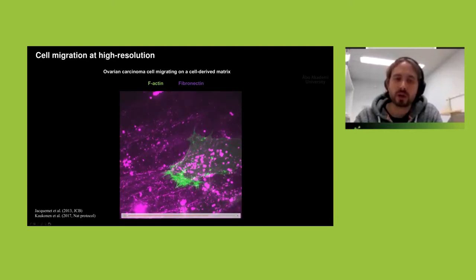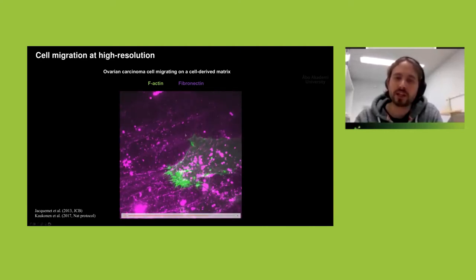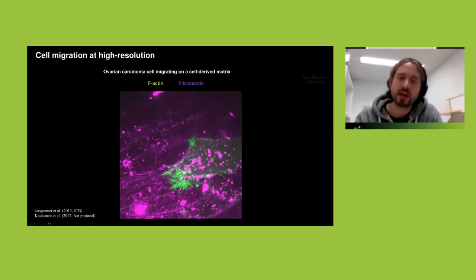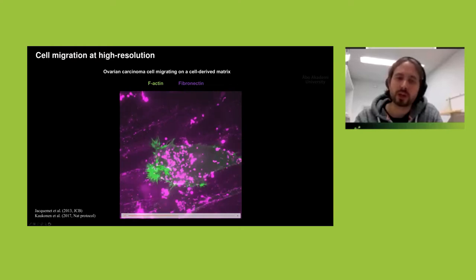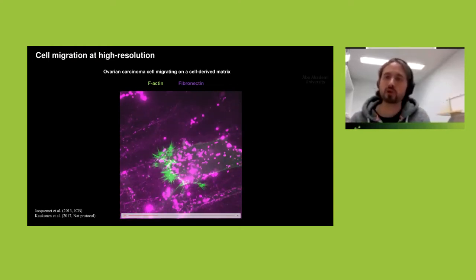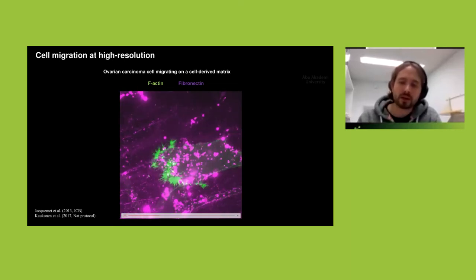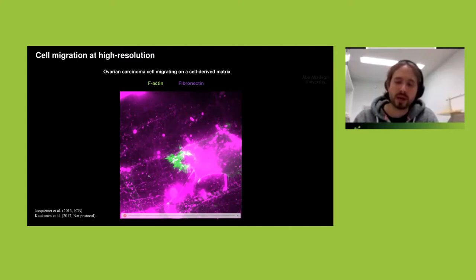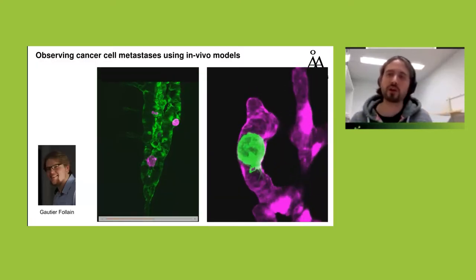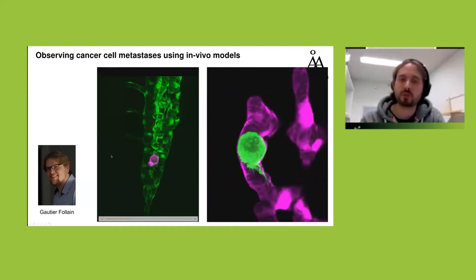Here are some videos — already almost eight years old — looking at ovarian carcinoma cells migrating on cell-derived matrices, with the actin cytoskeleton labeled. We were interested in how those spiky filopodial protrusions are involved in driving migration forward. We're now also using more complex systems to look at how cancer cells behave in a more in vivo-like environment, including zebrafish embryos.